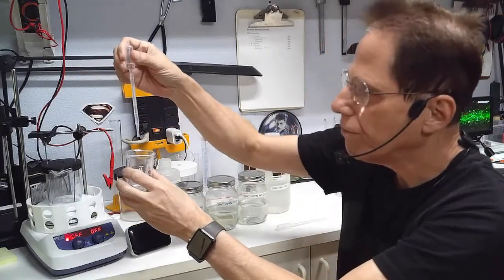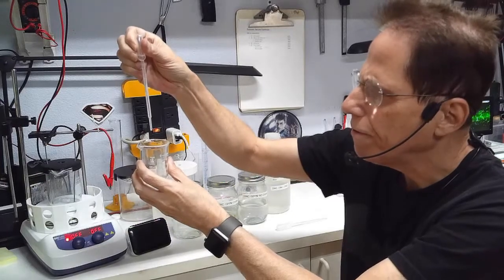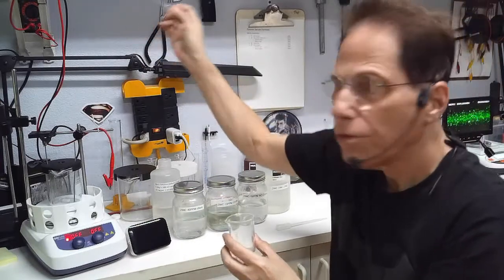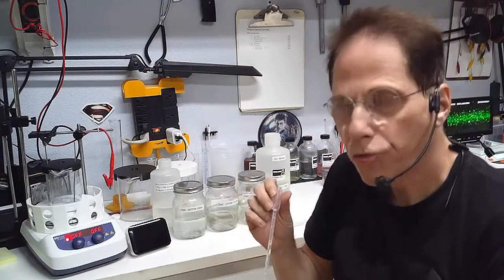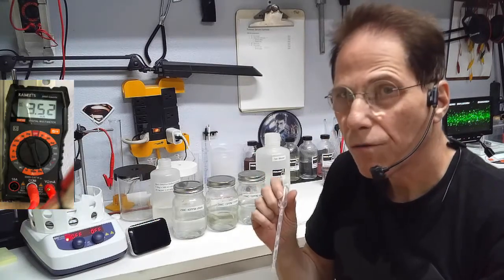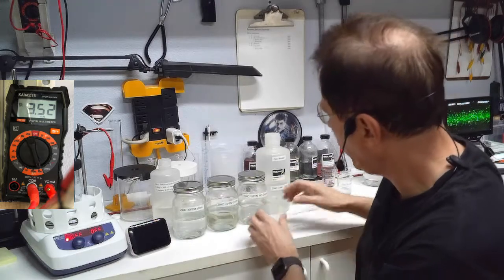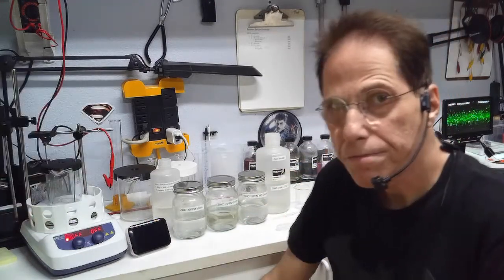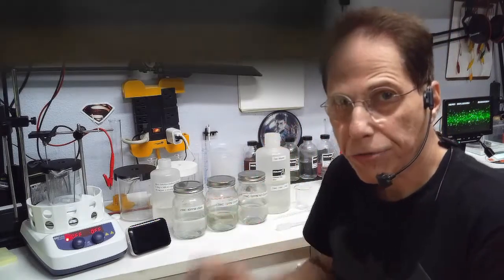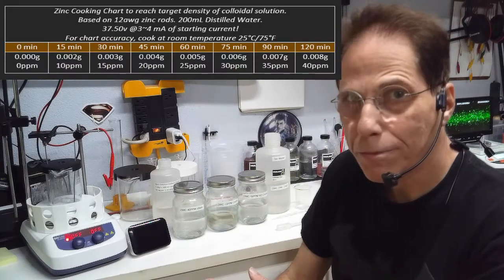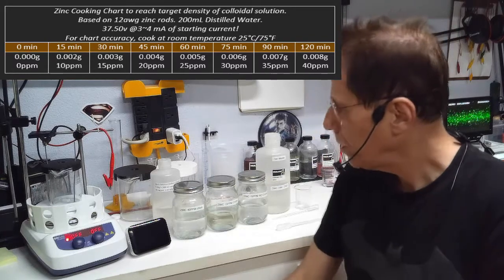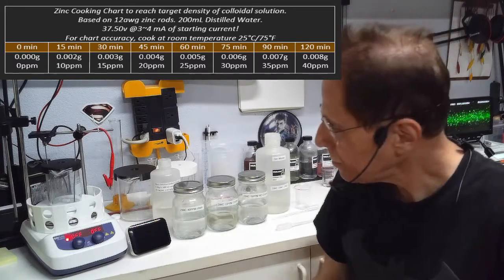You're going to drip in one drop at a time. You can use an eyedropper or a pipette. You're going to drip one drop at a time and watch the meter until it reads three milliamps. Don't let it go over five milliamps. Ideally you want to keep it between three and four milliamps of current. Then the chart will be accurate. The further you go away from three milliamps, the faster it's going to cook and the less accurate the chart's going to be.